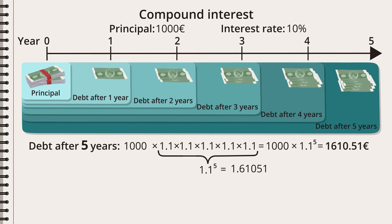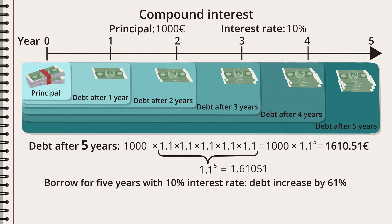In total, the debt after five years is the principal times 1.1 to the power of five — that's the amount Michael has to pay back in five years. Ten percent annual interest for five years with compound interest makes the debt increase by 61 percent. Had the bank instead used simple interest, the same debt would have only increased by 50 percent. But Michael pays interest on the interest, and that makes the debt grow faster and faster.